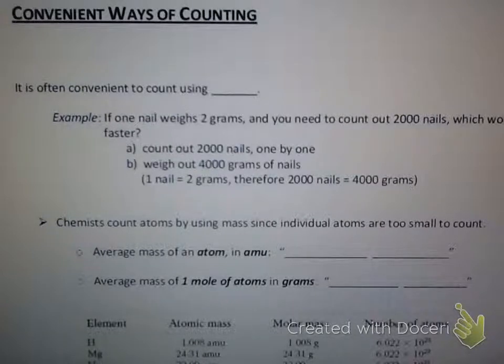This is the second video in chapter 7. In the first video we talked about what a mole is — it's just a unit used to count a large number of something. One mole is 6.022 times 10 to the 23rd, that's a huge number — it's six with 23 zeros behind it of anything. Now think about actually counting that number out: one, two, three...